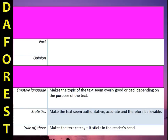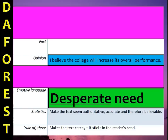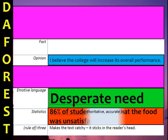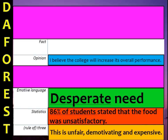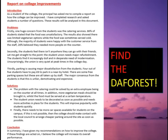Here's the FOREST I used in the report. For opinion: 'I believe the college will increase its overall performance.' For emotive language: 'desperate need' rather than just 'in need.' For statistics: '86% of students stated the food was unsatisfactory.' For rule of three — just once: 'unfair, demotivating and expensive.' In the exam, do a quick plan and a very quick FOREST plan at the top of your page. It shows the examiner you're doing really well, and it helps you structure your answer. A lot of students learn about FOREST but don't use it — don't be afraid to show off.